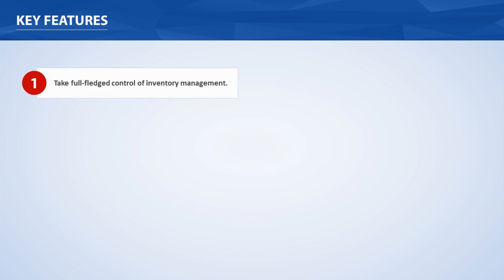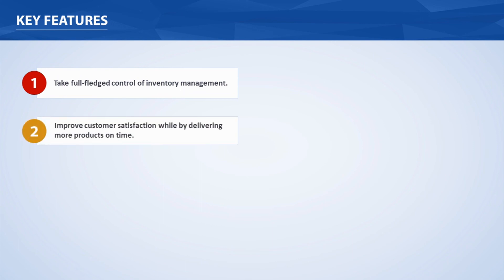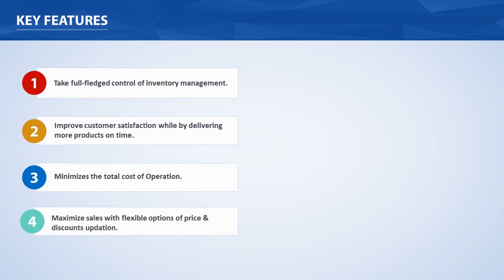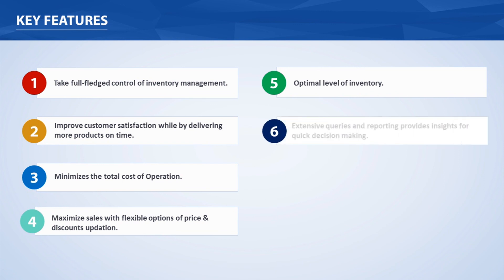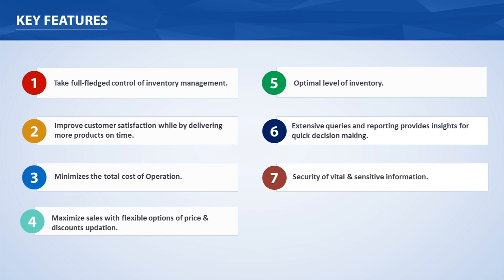Key benefits of MCA eBiz Inventory: Take full-fledged control of inventory management. Improve customer satisfaction by delivering more products on time. Minimizes the total cost of operation. Maximizes sales with flexible options for price and discount updates. Maintain an optimal level of inventory. Extensive queries and reporting provide insights for quick decision making. Security of vital and sensitive information.